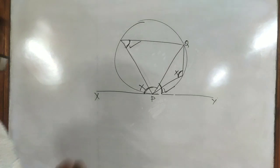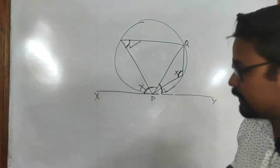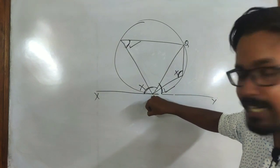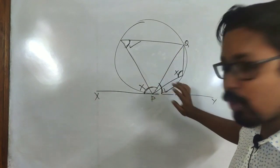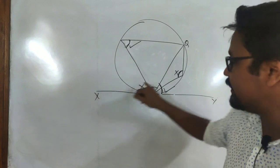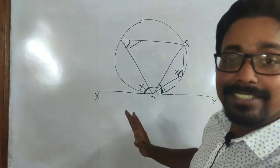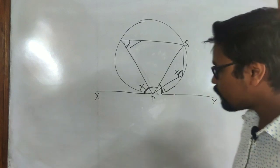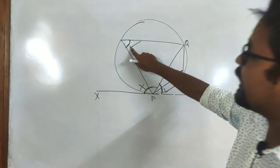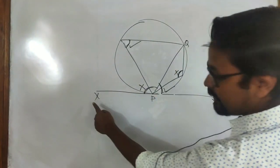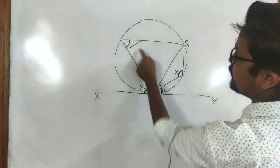So the theorem states: if a chord is drawn at the point of contact of a tangent on the same circle, the two angles formed by the chord with the tangent will each be equal — respectively — to the angles in the opposite segments of the chord. This one equals this one, and that one equals that one.